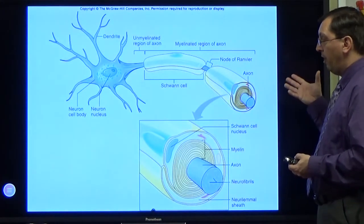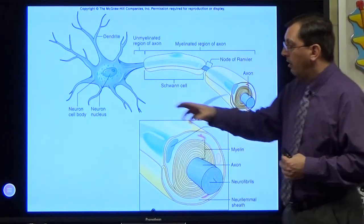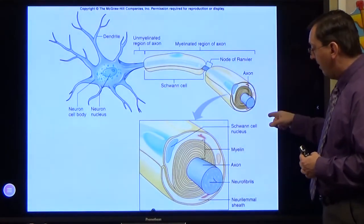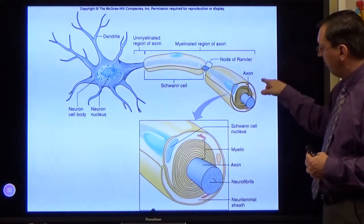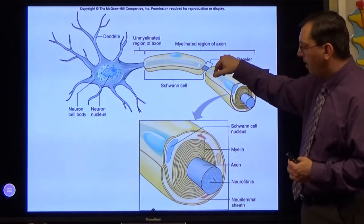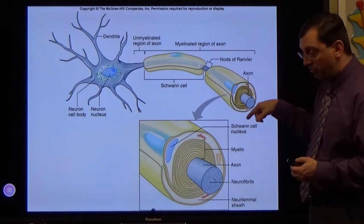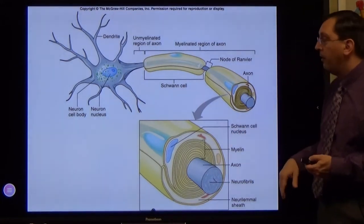This shows you a picture of a typical neuron. These are dendrites, cell body. Here is your axon. You'll notice there's layers of these myelin sheaths with the nodes of Ranvier. The Schwann cells here actually form the myelin around each of these different ones and form the layers around it.